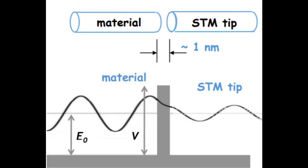An STM has a metal tip that it brings near the surface of some metal, leaving a gap between the two. This gap is roughly a nanometer across, so it's rather small.